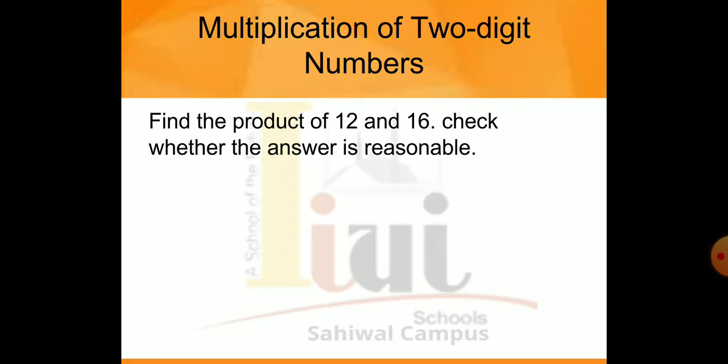You have page number 49 for example. Find the product of 12 and 16 and check whether the answer is reasonable. We have to perform the multiplication of 12 and 16. This should be reasonable. See that 12 is a 2-digit number and 16 is a 2-digit number.